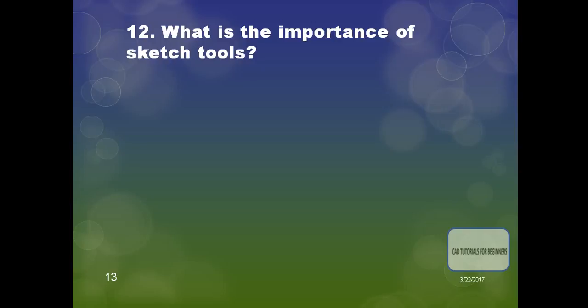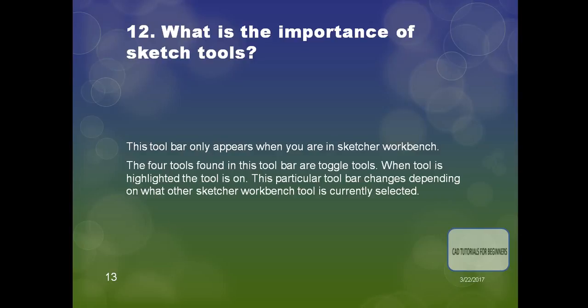The next question is: what is the importance of the Sketch Tools toolbar? This toolbar only appears when you are in the Sketcher workbench. The four tools found in this toolbar are toggle tools — when a tool is highlighted it means the tool is on. This toolbar changes depending on which sketcher workbench tool is currently selected.